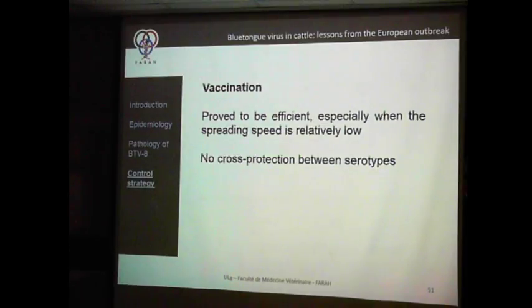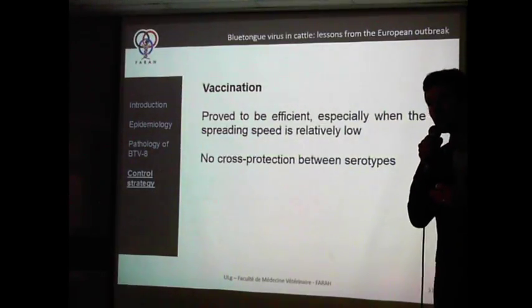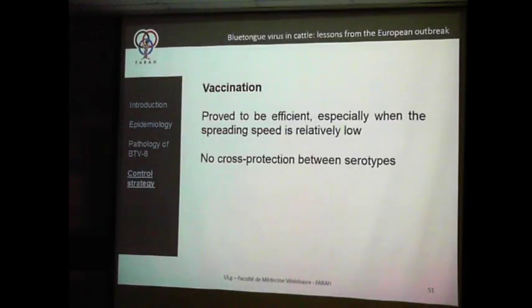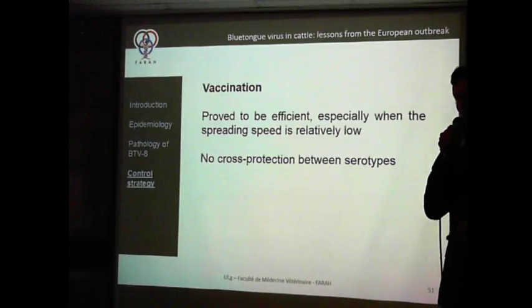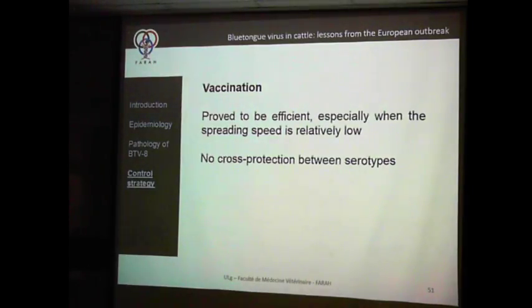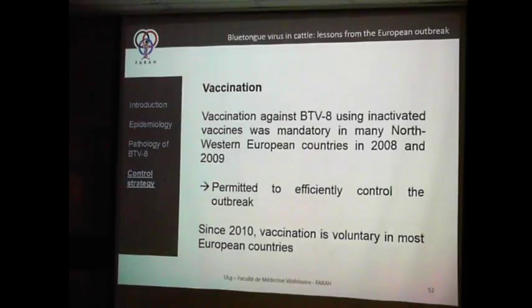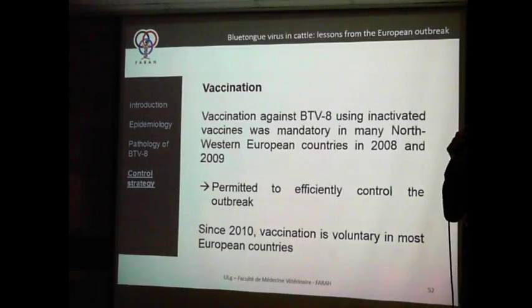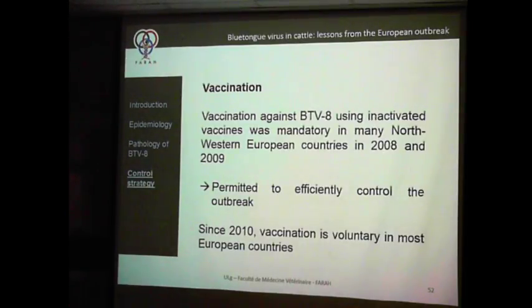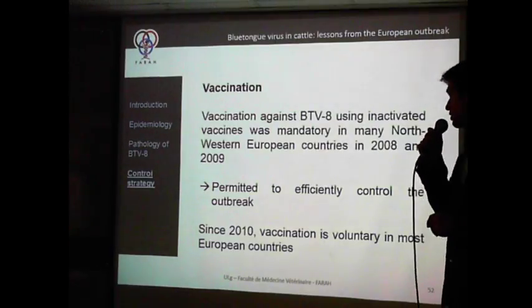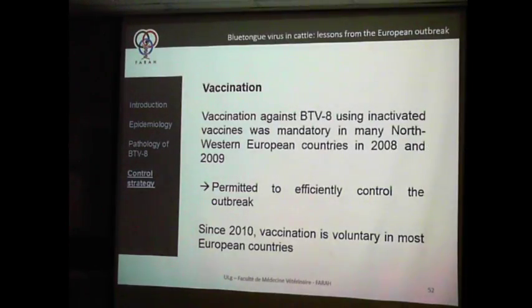Even for a given serotype, the virus evolves quickly and it is possible that the vaccine on the market is not well adapted and won't protect vaccinated animals — this is the main problem. Mandatory vaccination using inactivated vaccines in many north European countries in 2008 and 2009 was really efficient. It blocked transmission of the virus and quickly brought us back to a situation without any clinical signs — vaccination is really, really efficient.